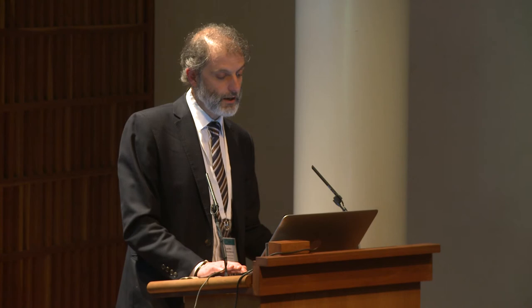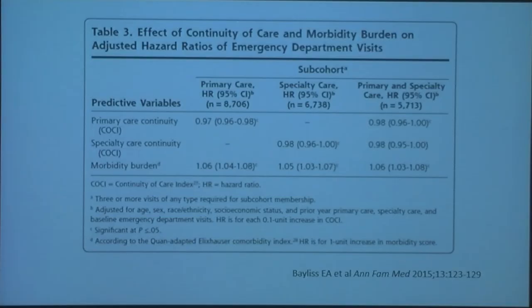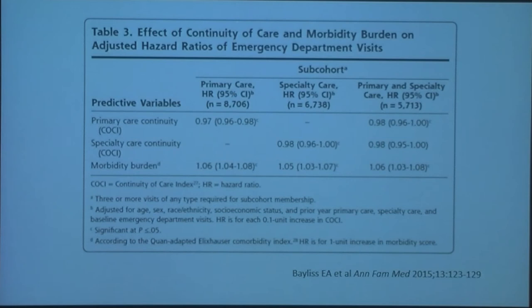The studies that associate multimorbidity and continuity of care basically fall within three types, and all of them are sparse in numbers. Basically, studies which have simultaneously studied the impacts of either concept or both concepts — continuity and multimorbidity — on an outcome. What you can see in this example is that continuity of care helps prevent people ending up in emergency departments, and morbidity burden increases it, with morbidity burden used as a proxy for multimorbidity.